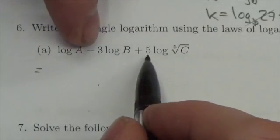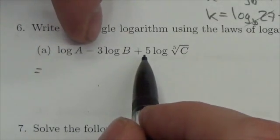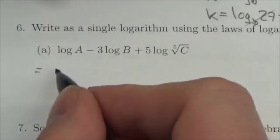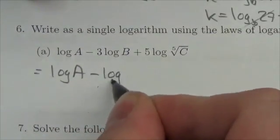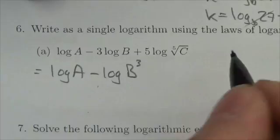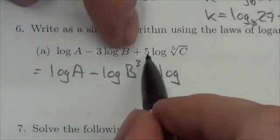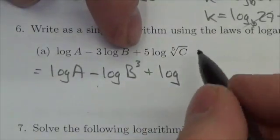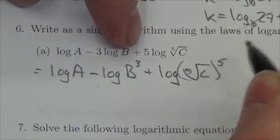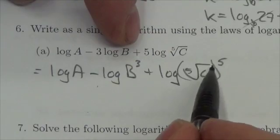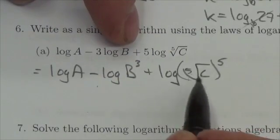The very first step I've got to deal with is the coefficient multiplication. So this becomes the log of A minus the log of B³ plus the log of, now I'm gonna take five, well I'll do it here in this step and then in the next step we'll deal with it. This is gonna be the fifth root of C to the fifth. Now I hope you see that that just becomes C.